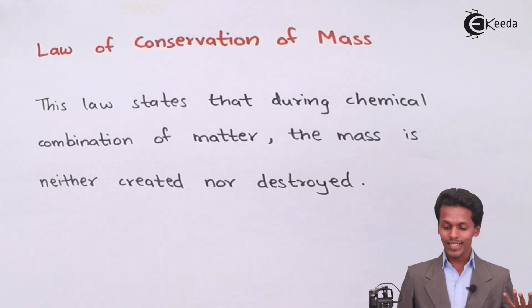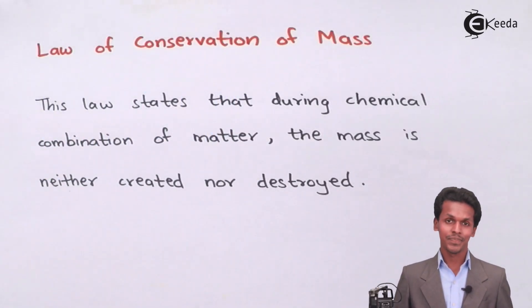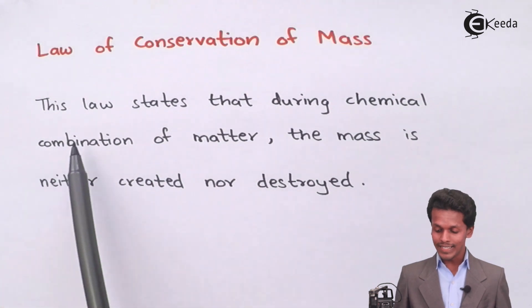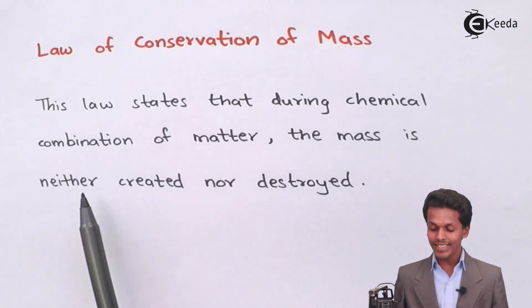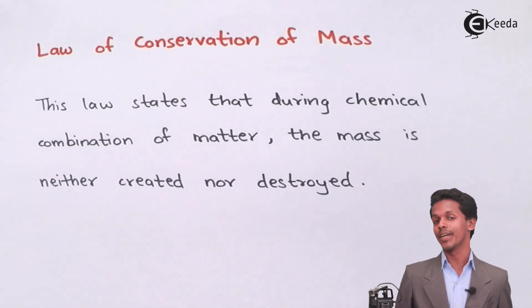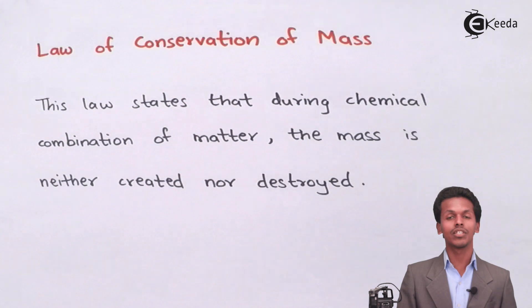Let us see what is the law of conservation of mass. This law states that during chemical combination of matter, the mass is neither created nor destroyed. Whenever a chemical reaction occurs, the reactants react with each other to produce products.